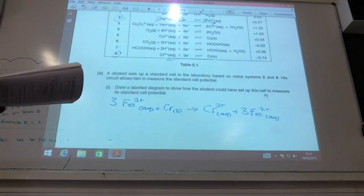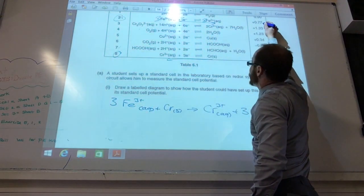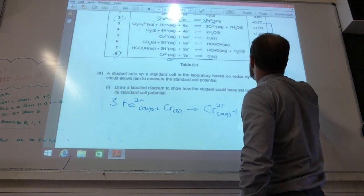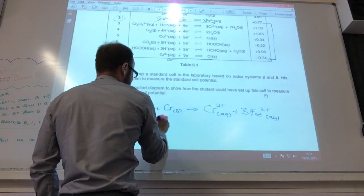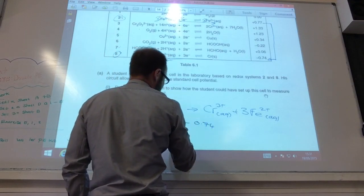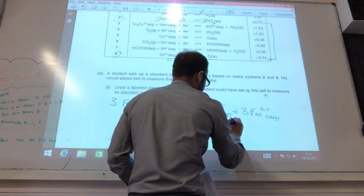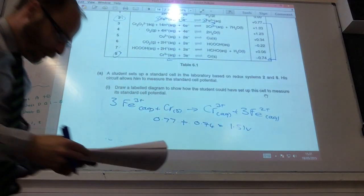So, the next part is I need to find the standard cell potential for these two. It's the difference between that one and that one. So, it's going to be 0.77 minus -0.74, which gives 0.77 plus 0.74, which comes to 1.51 volts.